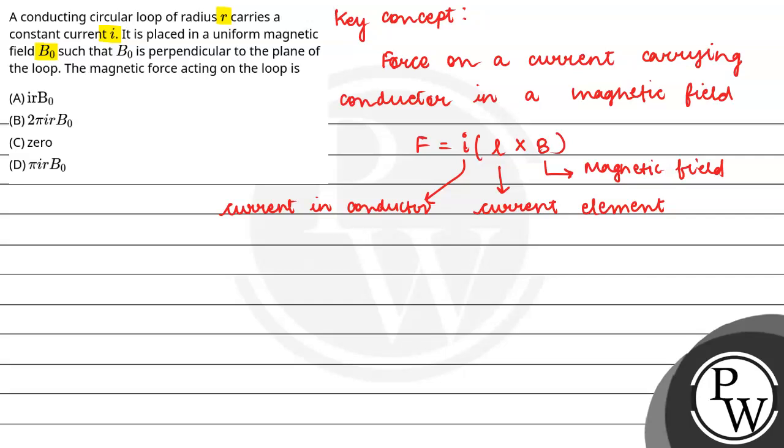So here our force is I into L cross B. Now let's move on to the question. I have a circular loop, conducting circular loop. So let's suppose this is our circular loop, and carries current I. So current flows I.